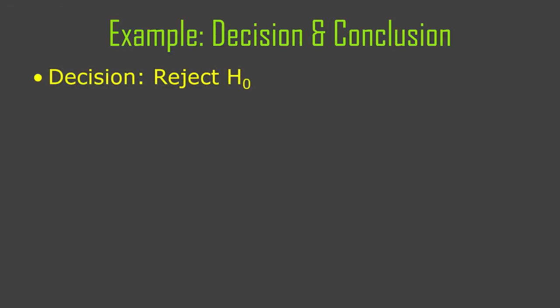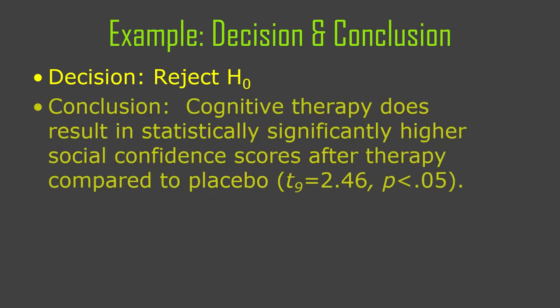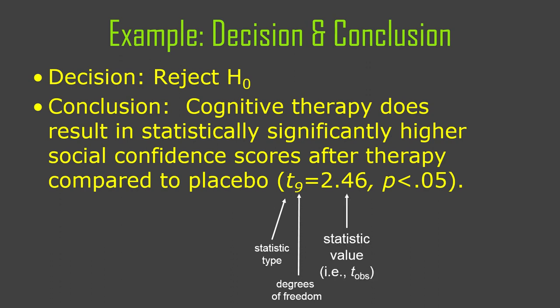The decision we have to make is to reject the null hypothesis. Our conclusion: cognitive therapy does result in statistically significantly higher social confidence scores after therapy compared to placebo. Now, a reminder about the important blurb you put at the end of conclusion statements in research reports and papers — other researchers need to see this information in case they want to reanalyze your data. You put the statistic type, which is t; the degrees of freedom; the value of t observed; and then something about the p-value — either a specific p-value or p less than or greater than your alpha level. And you've got to get that right.